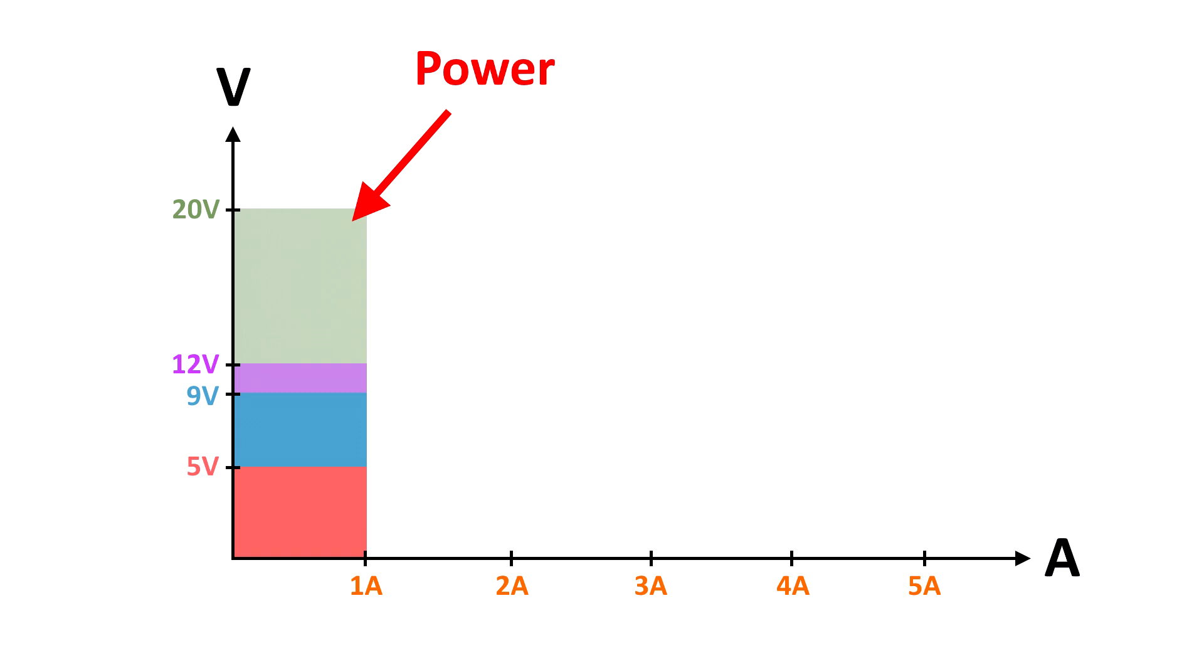So 5 volts, 1 amp, you're getting 4.5-5 watts. At 20 volts, simply by bumping the voltage up, you've actually increased the power to charge the battery by almost a factor of 4.